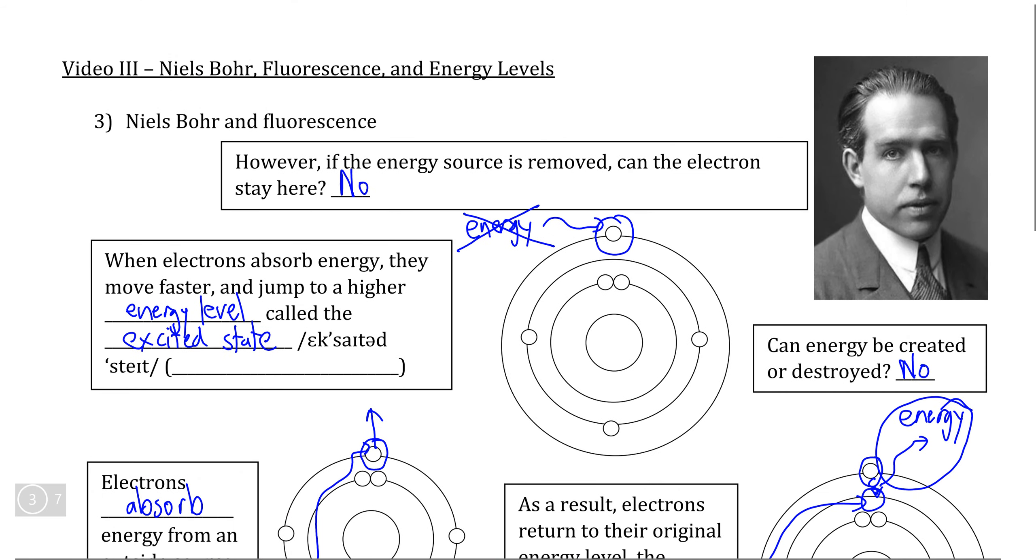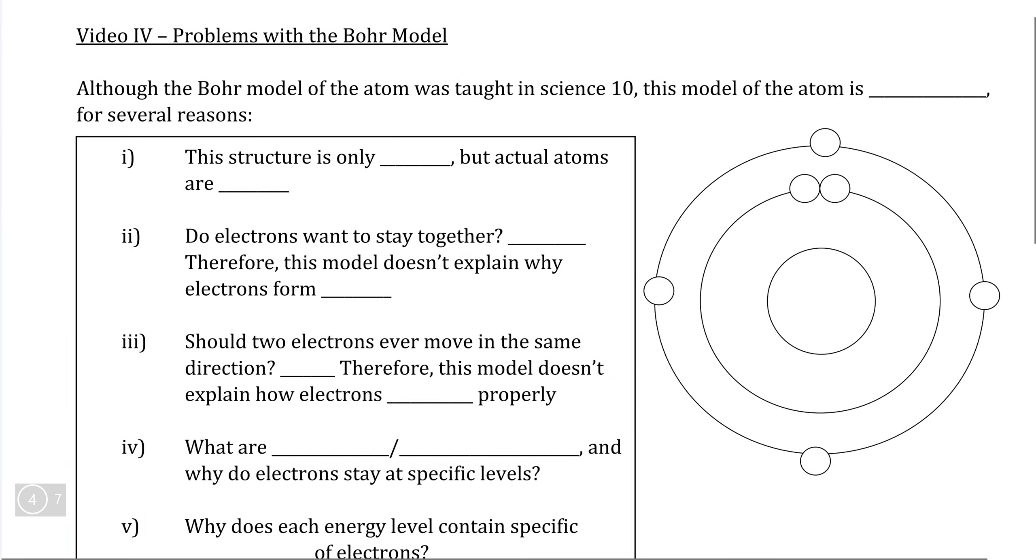However, as we'll explore in the next video, even Niels Bohr's model of the atom and of the organization of electrons within the atom has quite a few problems, which we can actually analyze by looking at the properties of electrons themselves. And that will be the subject of the final video in this series.